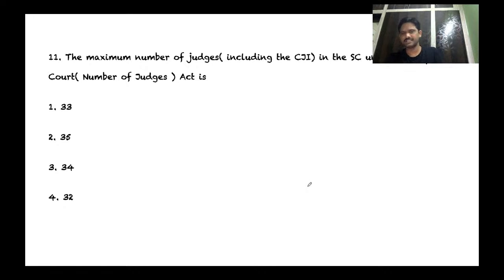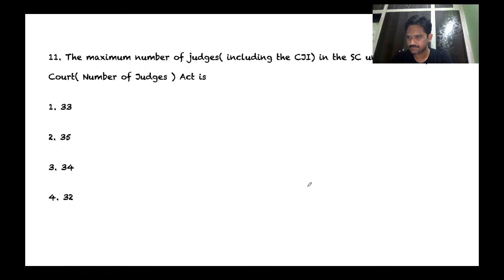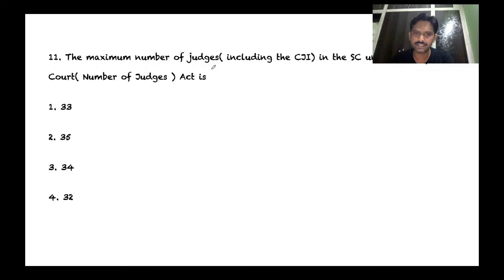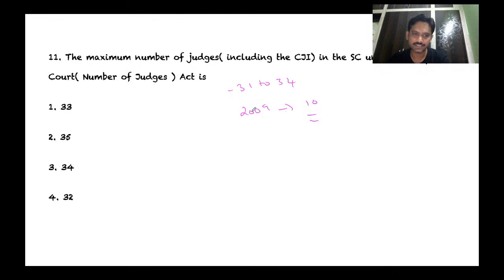Eleventh question: the maximum number of judges including the Chief Justice of India in the Supreme Court under the Supreme Court Number of Judges Act. The answer is 34 — that is 33 judges plus one Chief Justice of India. The number was previously 31, increased to 34. The last increase before this was in 2009, and after 10 years the government took the decision to increase the number.